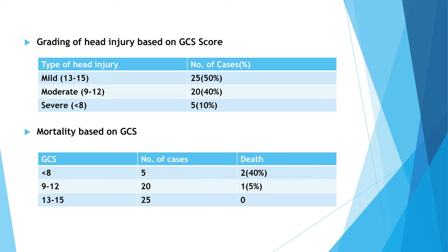Patients with GCS score of less than 8 numbered 5, of which 2 patients could not survive. With a GCS score in the range of 9 to 12, there were 20 cases, of which 1 patient did not survive. With a GCS score of 13 to 15, there were 25 cases, in which all the patients survived.